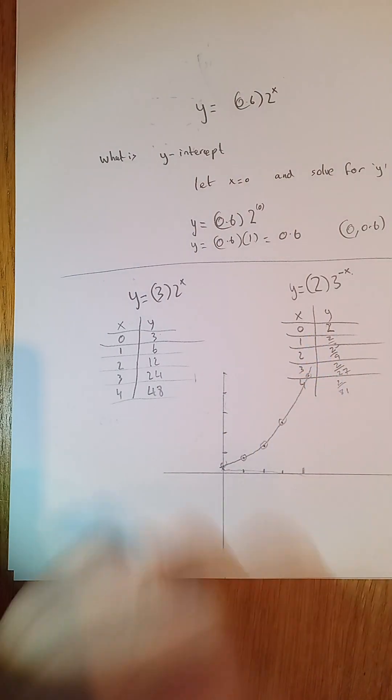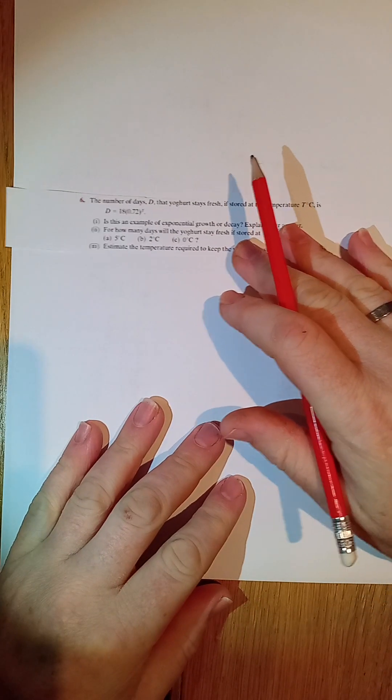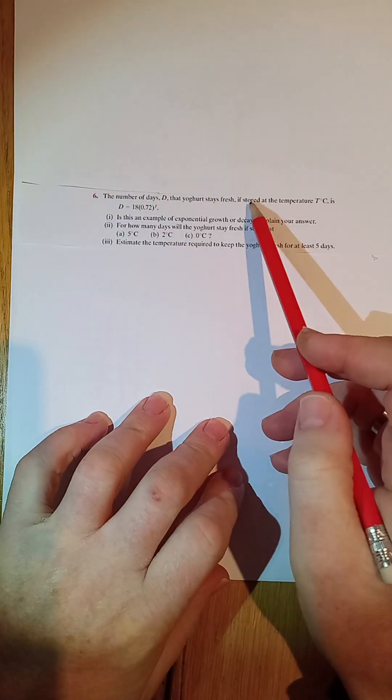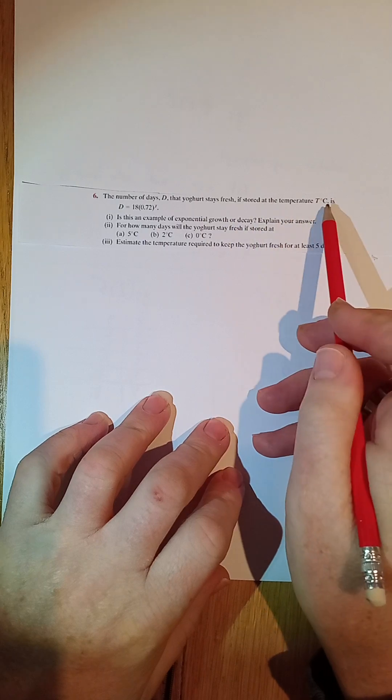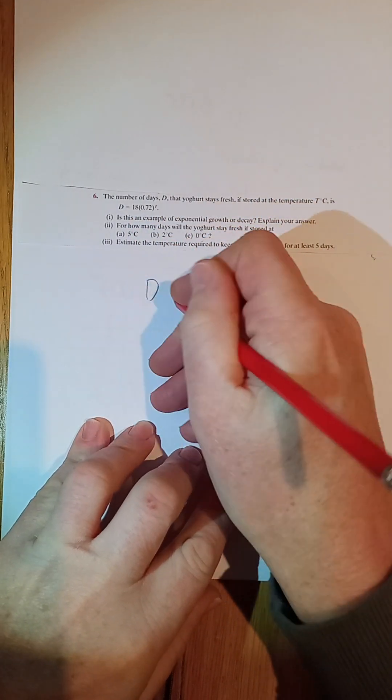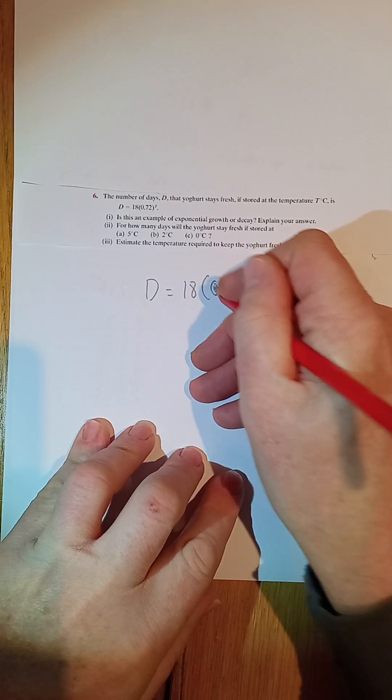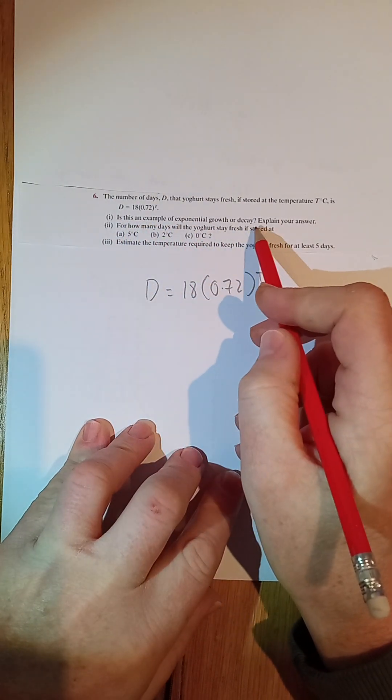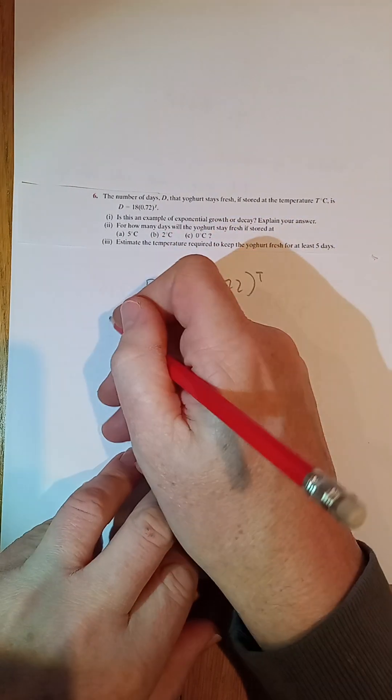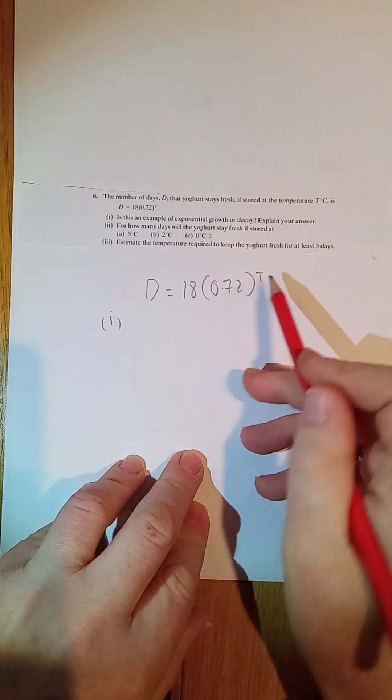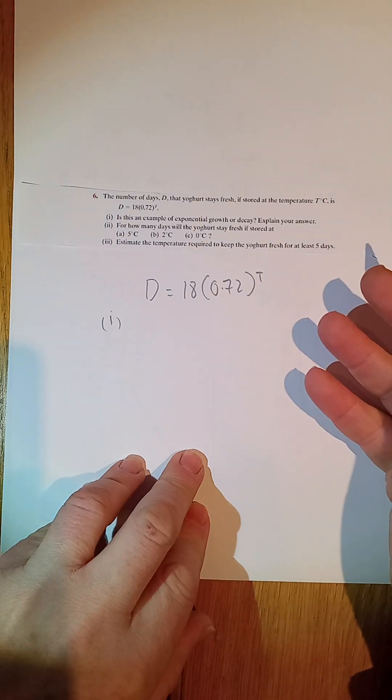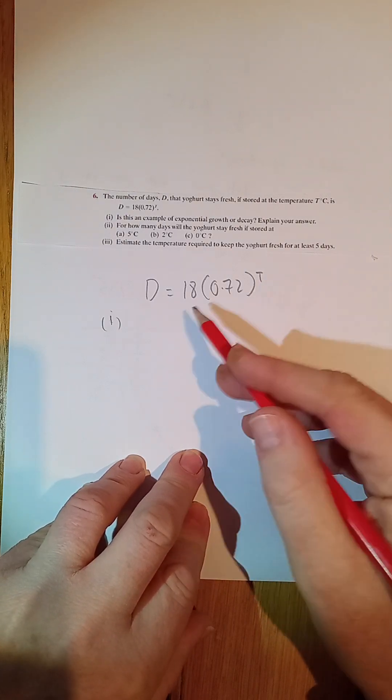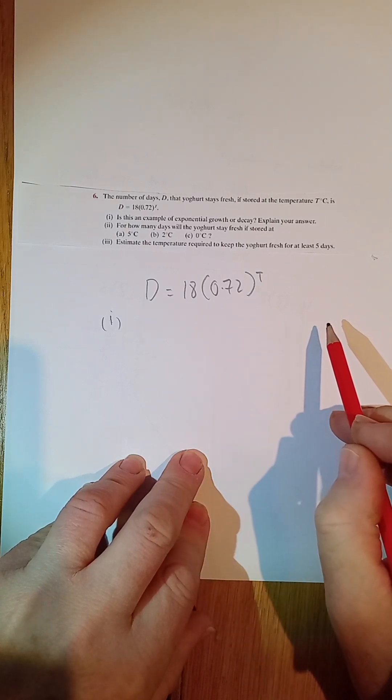So let's have a look at another type of question. Here's an example of a nice little question. The number of days the yogurt stays fresh if stored at a temperature T is D is equal to 18 times 0.72 to the power of T, where T is the temperature. Is this example of growth or decay. All I have to do to test this for the first part is if I want to test whether it's growth or decay, all I have to do is put in values for T. I'll start with T is equal to 0, then T is equal to 1, then T is equal to 2, until I see whether I get an increasing or a decreasing function.